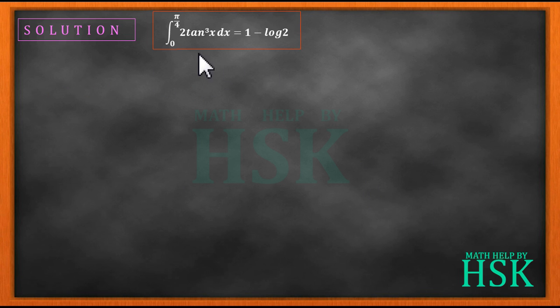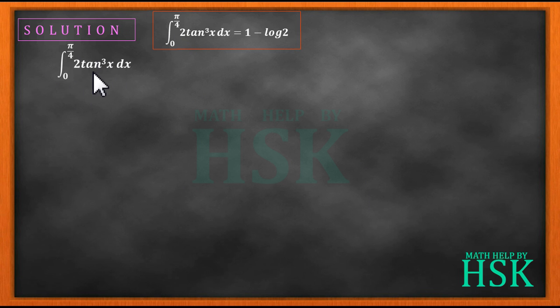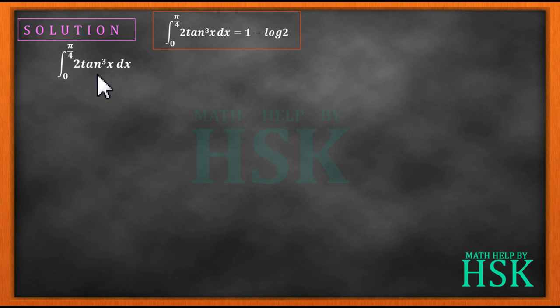To solve this question, I first take this definite integral and the first thing I see is that it contains the term 2tan³x. This term can be simplified into such terms that the integration can become possible, which is right now not possible. So I'm going to assume this integral is equal to I.